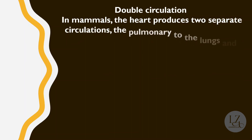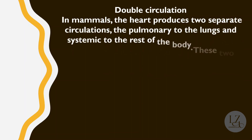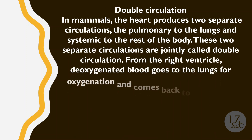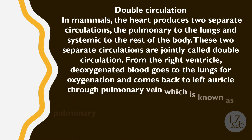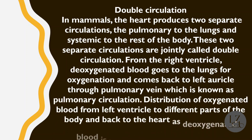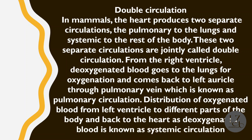Double circulation is a very important term. In mammals, the heart produces two separate circulations: pulmonary circulation to the lungs, and systemic circulation to the rest of the body. Together these are called double circulation. From the right ventricle, deoxygenated blood goes to the lungs for oxygenation and comes back to the left auricle through the pulmonary vein — this is known as pulmonary circulation.